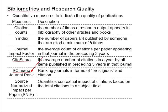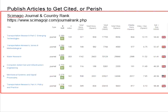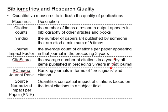Next is the SCImago journal rank, which I mentioned in our previous videos, giving a ranking from Q1 to Q4, indicating the prestige and the citations of that particular journal. Next is the Source Normalized Impact per Paper (SNIP), which quantifies the contextual impact of citations based on the total citations in the subject field. You can see there is a variety of measurements giving an indication in terms of publication quality.